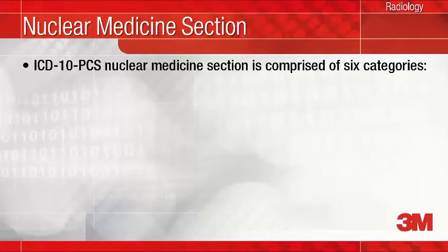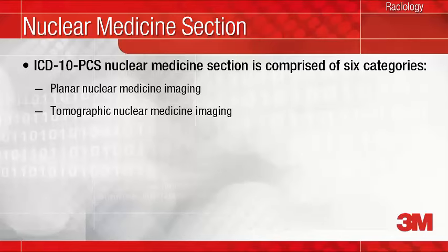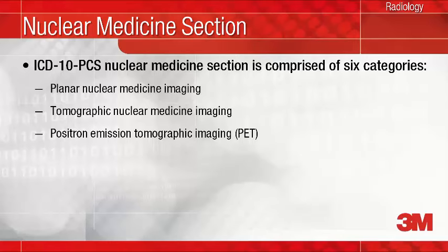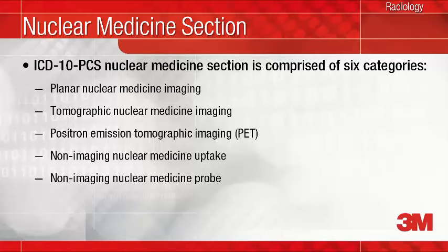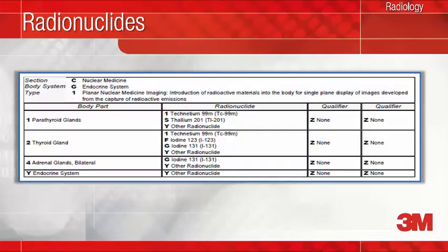The ICD-10 PCS nuclear medicine section is comprised of six categories, which are planar nuclear medicine imaging, non-imaging, non-imaging nuclear medicine uptake, non-imaging nuclear medicine probe, and systemic nuclear medicine therapy. The fifth character of an ICD-10 PCS nuclear medicine code identifies the radionuclide administered during the procedure. The coding professional will review the nuclear medicine report to determine the radionuclide administered. Since you include this information in your report, the good news is that there are no new documentation requirements for nuclear medicine procedures.